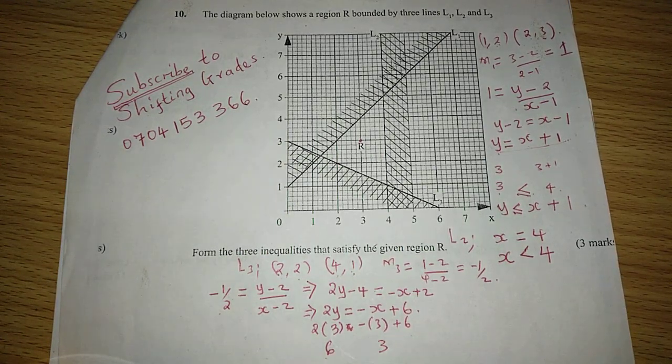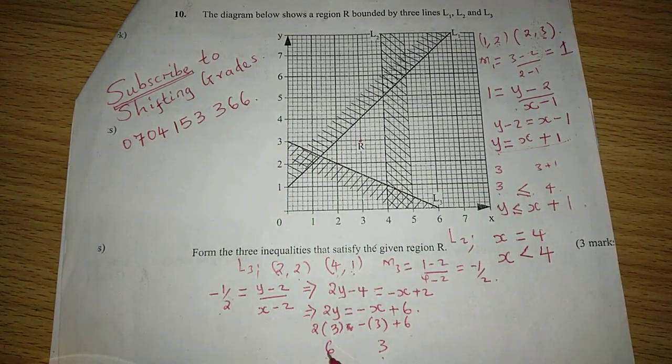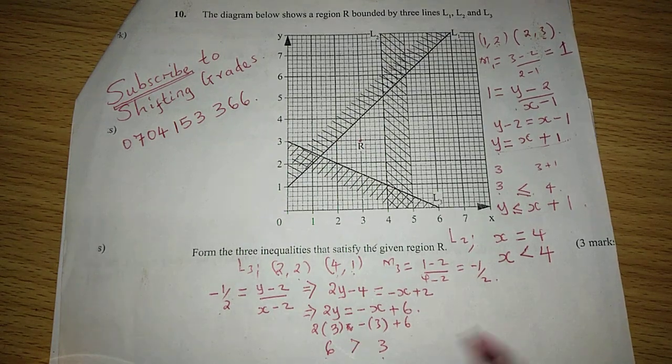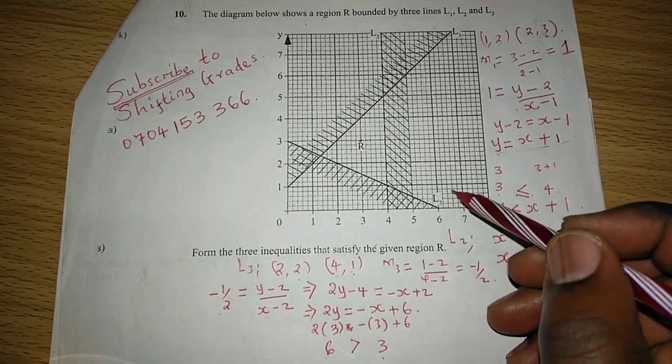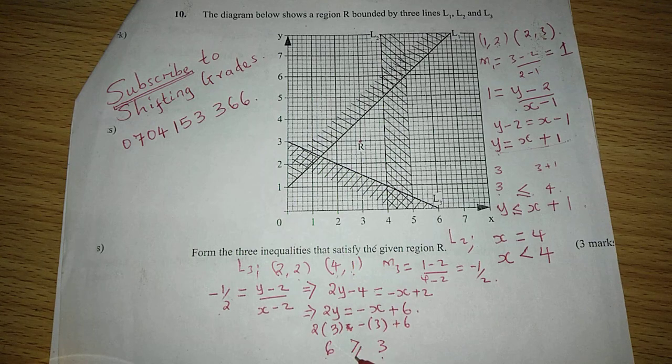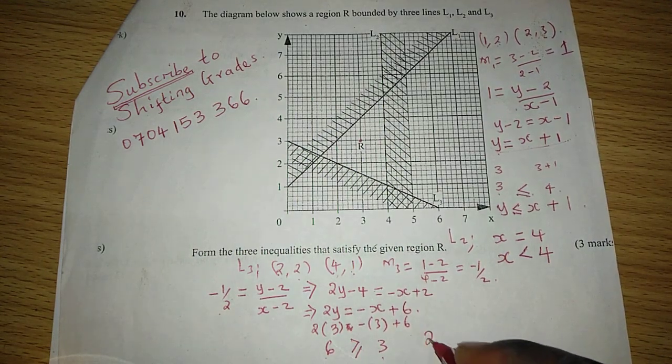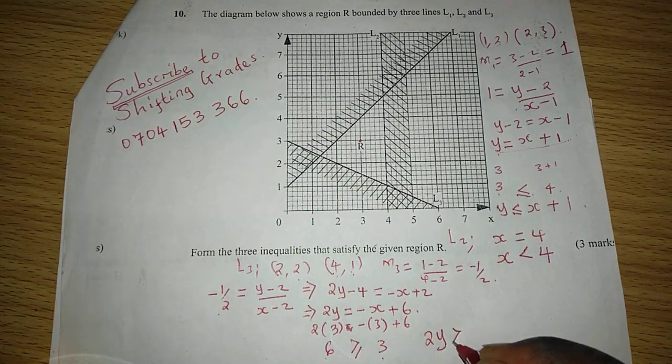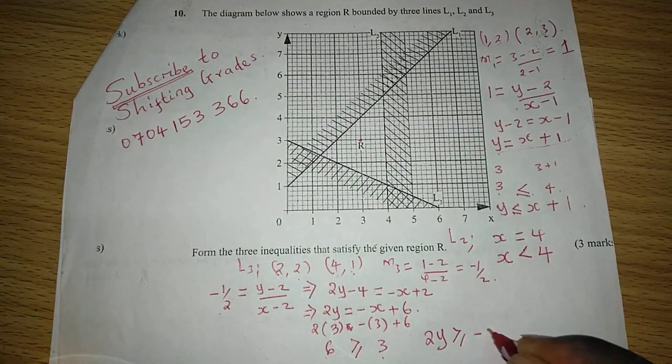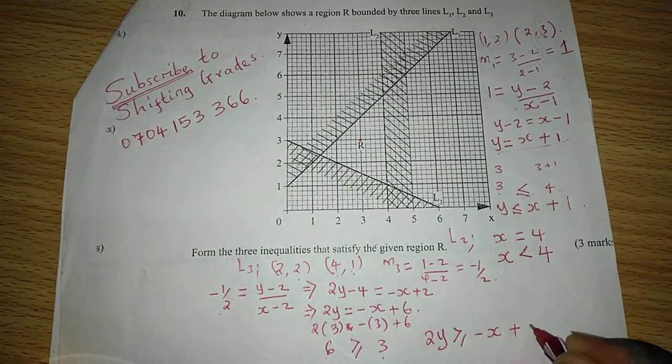The relationship between 6 and 3 is that 6 is greater than 3. And now that the line is complete, then we shall include this symbol to mean 2Y is greater than or equal to negative X plus 6. So this is the third inequality.